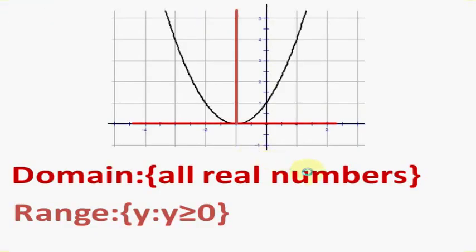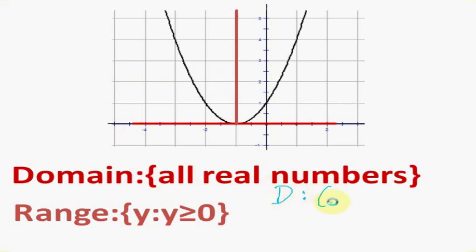Now if you look at a graph and try to figure out the domain and range, the domain here is all real numbers. When you look at the x-axis, you can tell the graph continuously goes to the right and to the left, including every single x value. I prefer interval notation — the domain would be negative infinity all the way up to positive infinity. Interval notation starts at the lowest point and goes up to the biggest point; if there's no break, this is what it looks like.